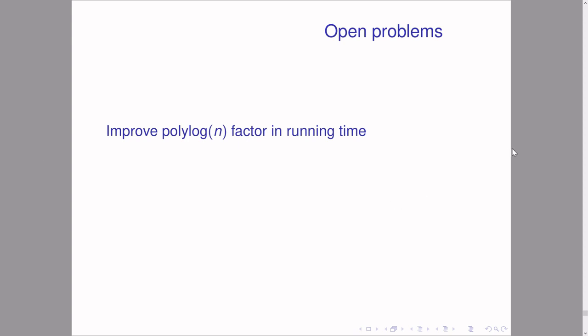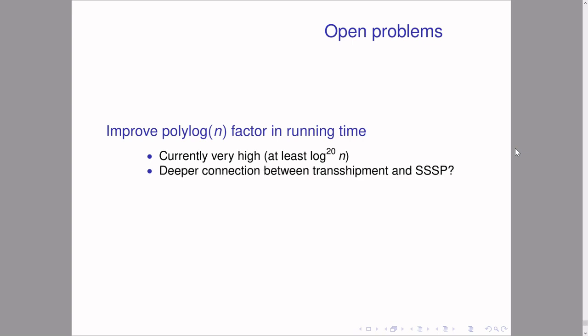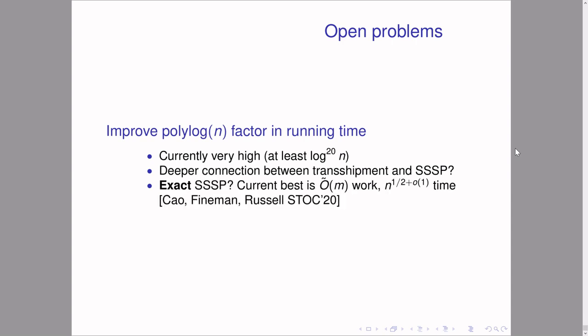Open problems: one interesting open problem is to improve the polylog factor in running time — currently it is very large, at least log²⁰n, due to the many steps in the recursive algorithm. Reducing the polylogs may lead to a deeper understanding of the relationship between SSSP and its continuous relaxation, the transshipment problem. Another interesting direction is exact SSSP: the best known result currently achieves near-linear work and roughly sqrt(n) span, and also works for directed graphs. Thanks for listening.